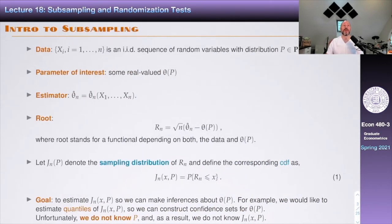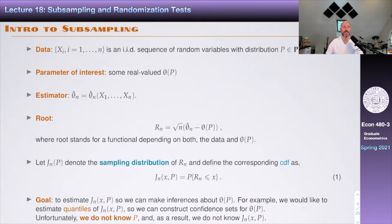We're going to talk about subsampling. The setting is the same we used for the bootstrap last class. There's going to be data X, an IID sample from distribution P belonging to some family of distributions bold P. The parameter we care about is some real-valued theta of P — which could be the mean, the median, or a regression coefficient. We have an estimator theta-hat-n: could be the sample mean, least squares, IV, whatever makes sense in context.